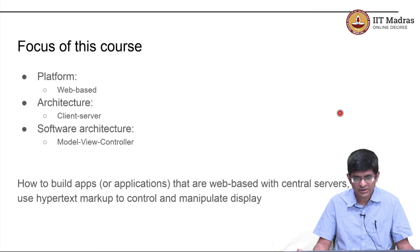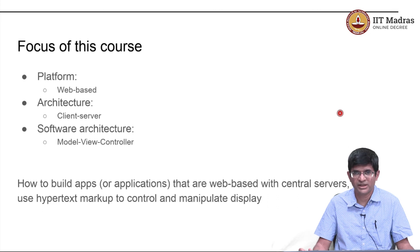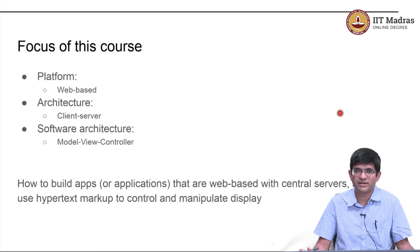To summarize everything we have looked at so far: the focus of this course is going to be to use the web as the platform for building applications. The architecture we will be looking at will be the client-server architecture — we are not going to be looking at distributed applications. Although once you have the basic ideas on how to develop a client-server based system, you will realize it is not that much of a jump to a distributed system. The abstraction we are going to stick to is: there is a client and there is a server — how do we communicate between them. And the software architecture will be the model view controller. The focus of this course, to summarize, will be how to build web-based apps that rely on central servers and use hypertext markup to control and manipulate the display of information on your screen.